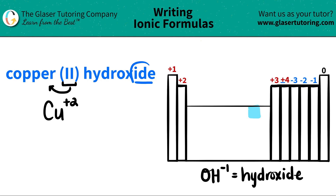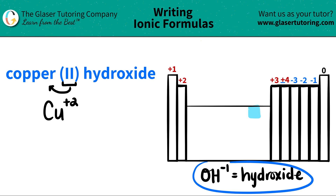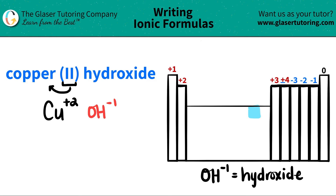Here's a trick: hydroxide, even though it has the -ide ending, this is a polyatomic. You won't find it on the periodic table. Hydroxide is a polyatomic ion — that's not going to be on the periodic table, you have to memorize it. Hydroxide is always OH minus 1.